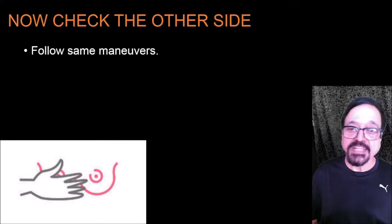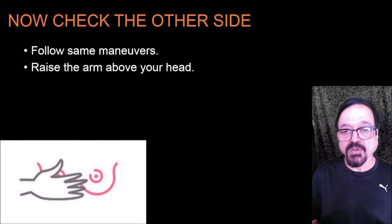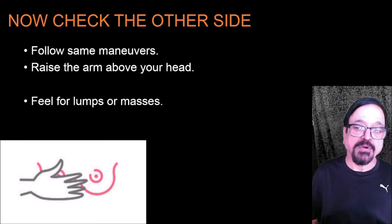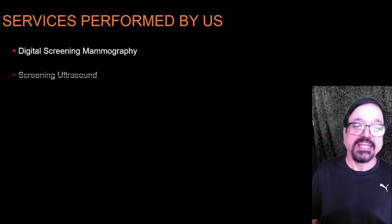Check the other side using the same maneuvers: raise the arm above, feel for lumps and masses, and repeat the entire examination for both sides.